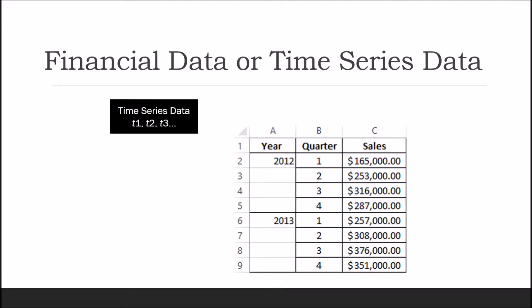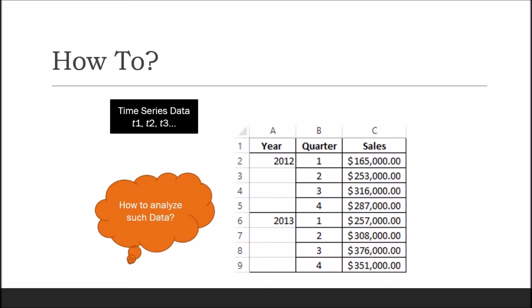Time series data is a sequence of observations of a defined variable at a uniform interval over a period of time in successive order. Most common series are in annual, quarterly, monthly, weekly, and daily frequencies. Time series analysis can be used to relate the current value of each of several economic variables to its past values, the past values of the other forecasted variables, and the values of current and past random errors.